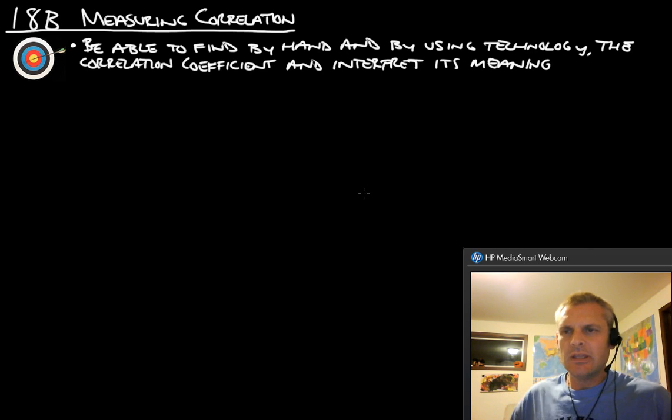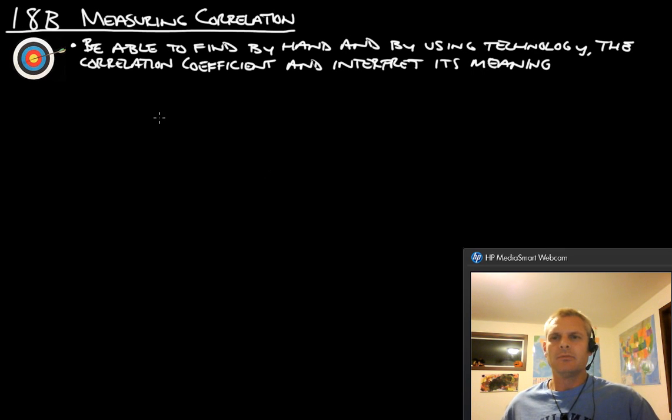Hello, this is Mr. Stansberry. I'm going to take you through the 18B notes on measuring correlation. At the end of this, you should be able to find by hand and by using technology the correlation coefficient and interpret its meaning.